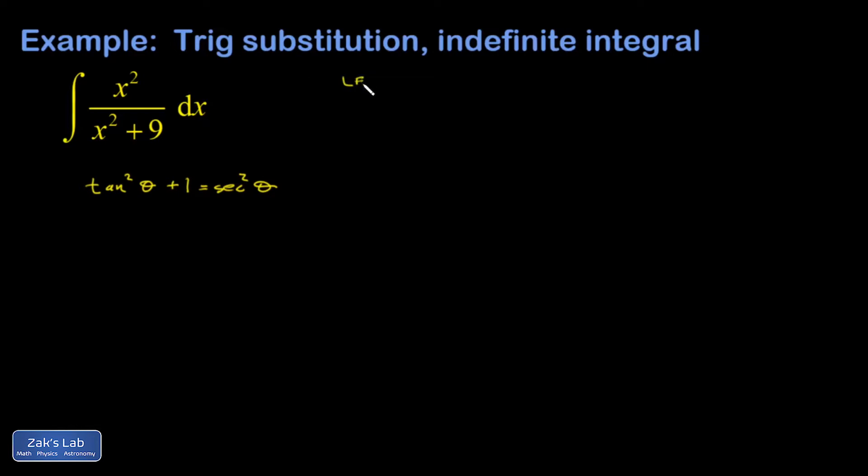So I'm going to say let x equal 3 tangent theta. That means my x squared will be 9 tangent squared theta. And then when I factor out the 9 I'll be able to apply this identity to simplify the denominator.